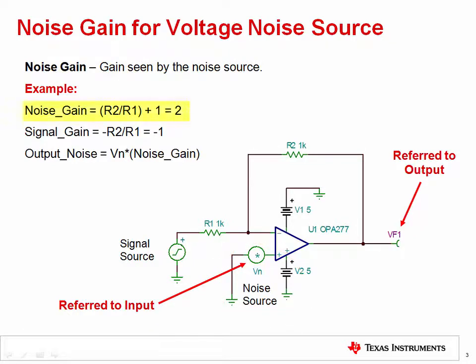The example here shows a circuit with a noise gain of 2 and a signal gain of negative 1. In other words, the circuit is an inverting amplifier with respect to the signal source, but a non-inverting amplifier with respect to the noise voltage source.